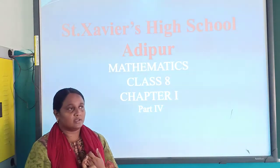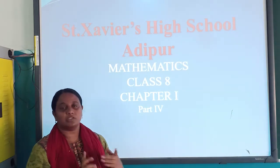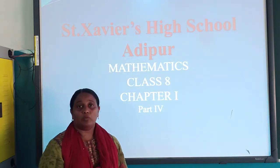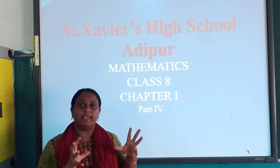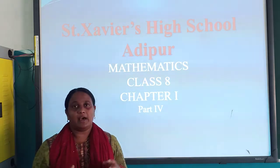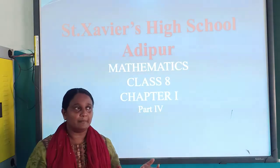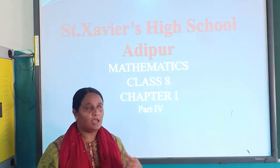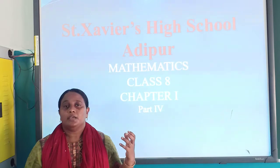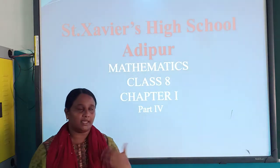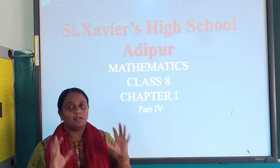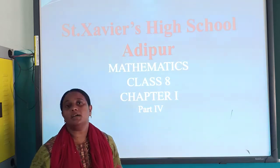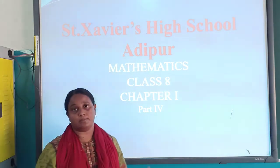After closure property, we discussed the commutative property. What was the commutative property? It simply means changing the place of numbers. If I am adding A and B, I get answer C. Then if I add B and A, I still get the same answer C — then the operation is commutative. That means rational numbers are commutative over addition. We discussed the same for subtraction, multiplication, and division.